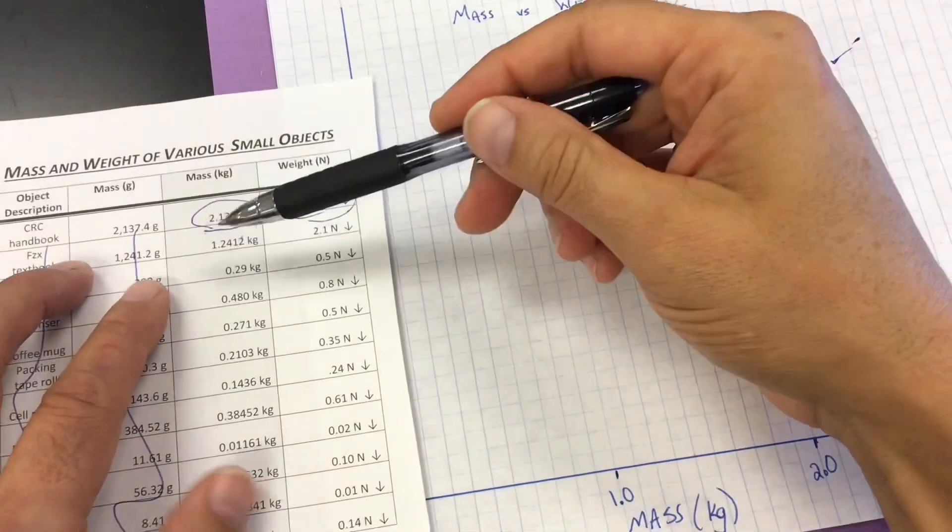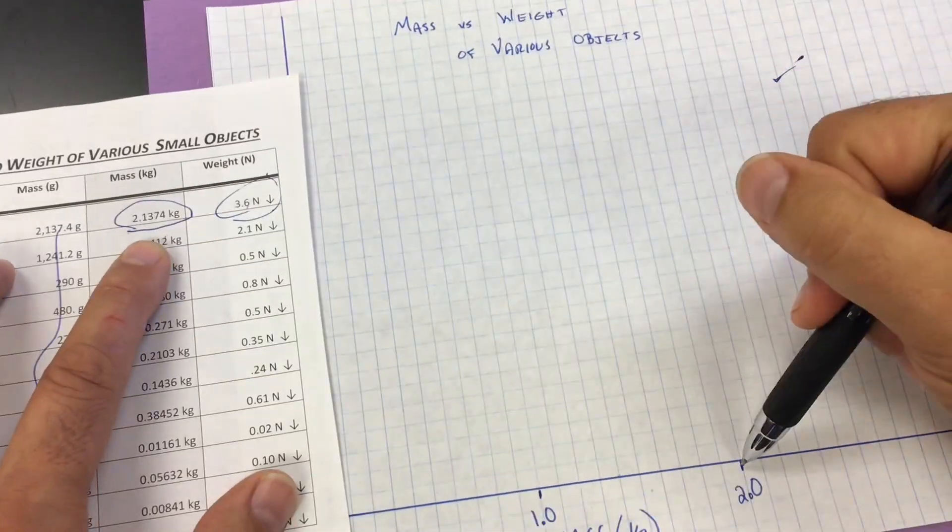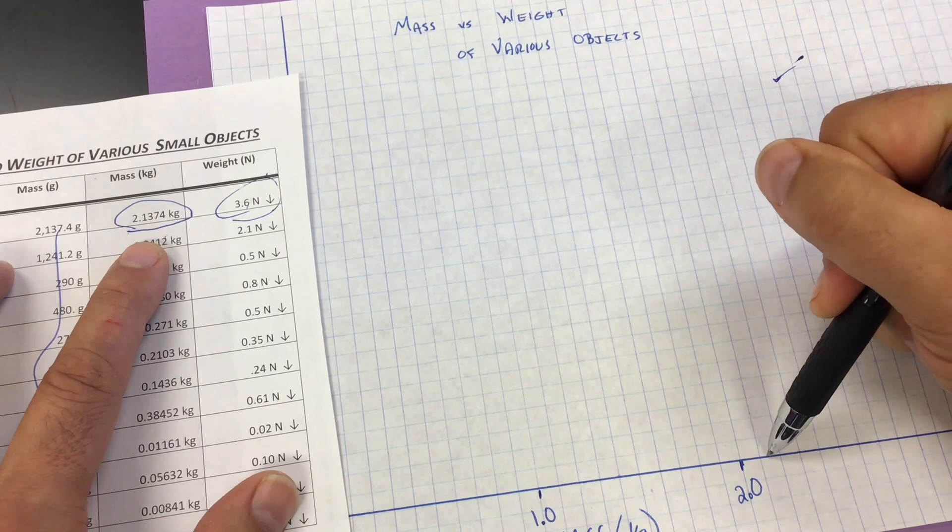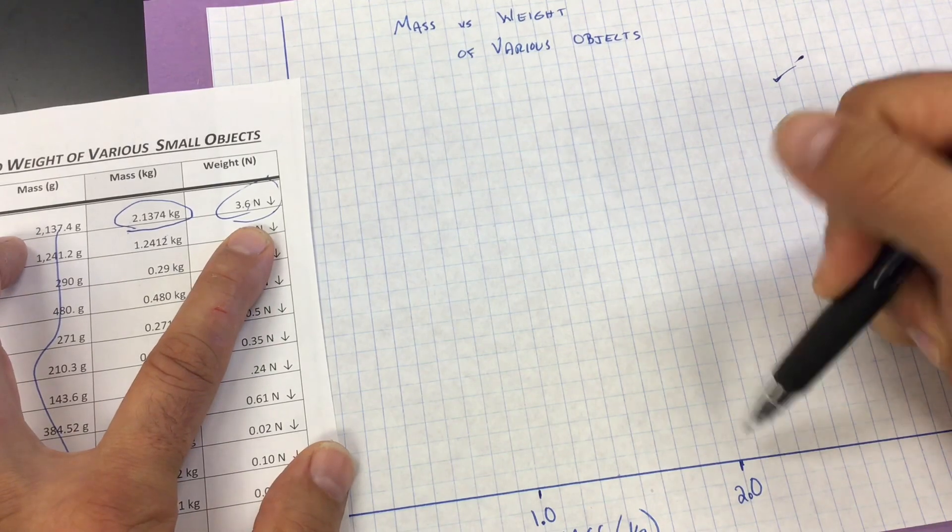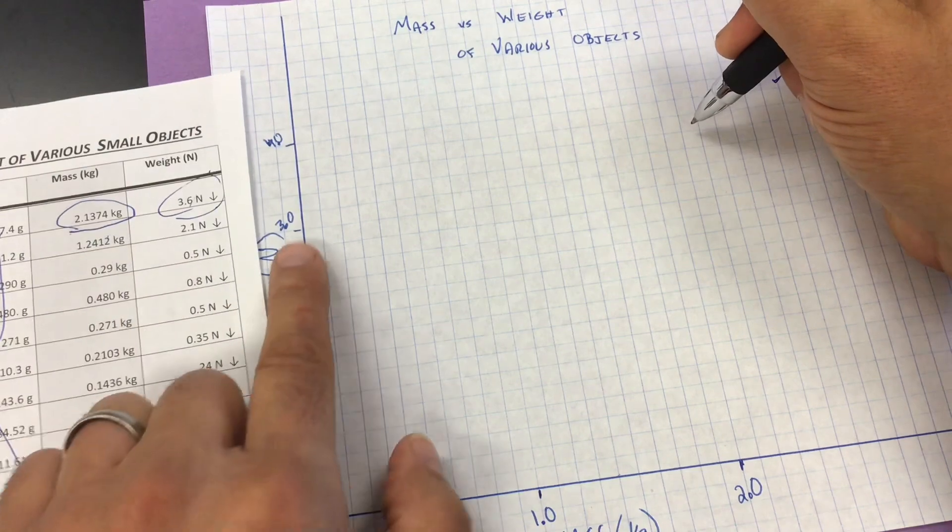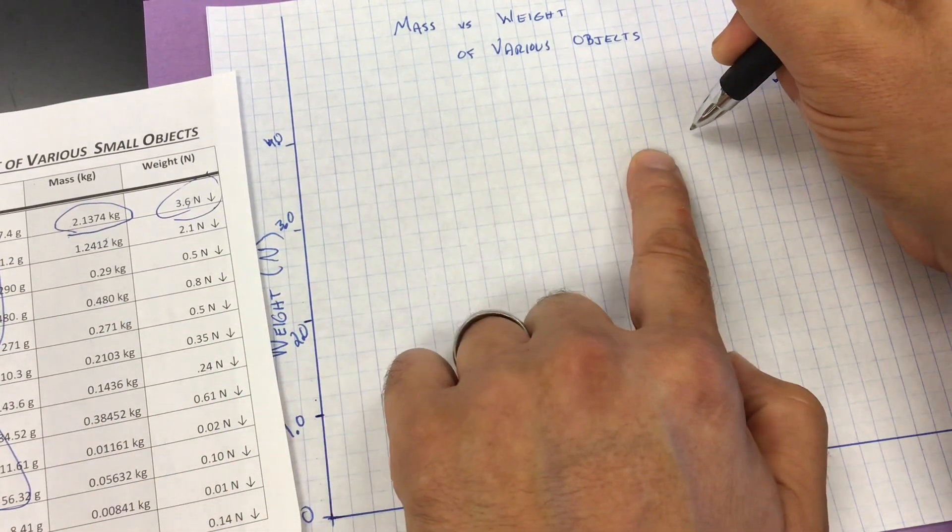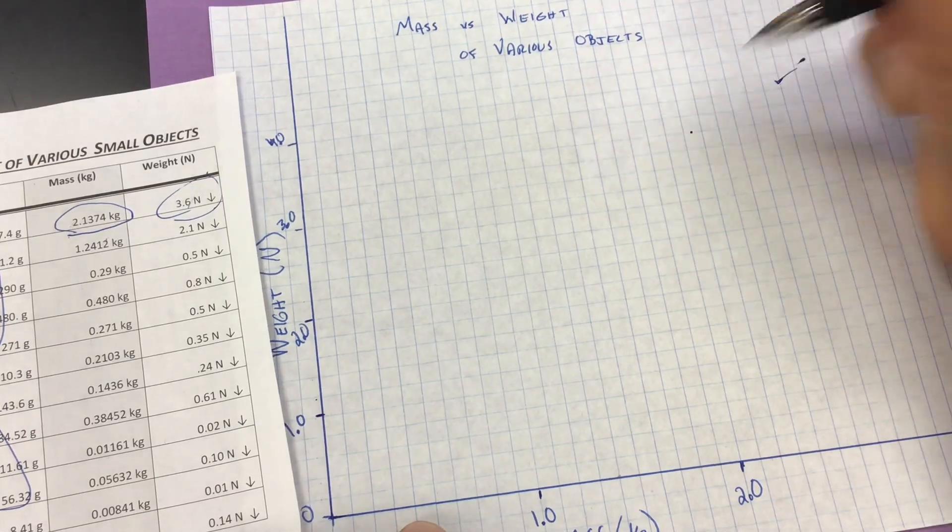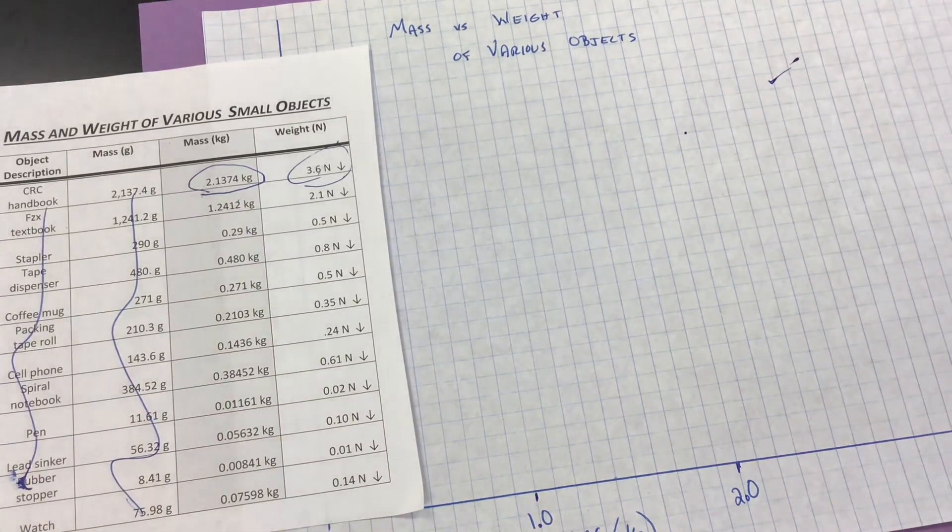Then you're just going to graph the X and the Y. Here's the X column. Here's the Y column. 2.1374. 2.1, 2.2. 2.1374 would be here. It would be right at that position. And that corresponds to 3.6. So 2.1 to 3.6 right here. That's about where that point is. And then you just keep on doing it for all these different points. Back in a minute.